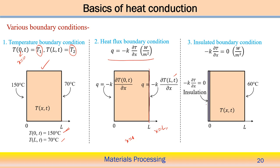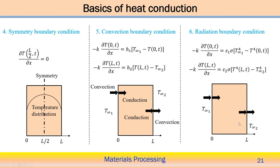The insulation boundary condition means ∂T/∂x = 0 at the surface. On the other surface we can prescribe a temperature, for example 60°C. Then the symmetry boundary condition: if the temperature distribution is symmetric with respect to a particular line, the symmetry boundary condition states that the temperature gradient normal to the symmetric line should equal zero. So ∂T/∂x = 0 at the symmetric line — that is treated as the symmetry boundary condition.